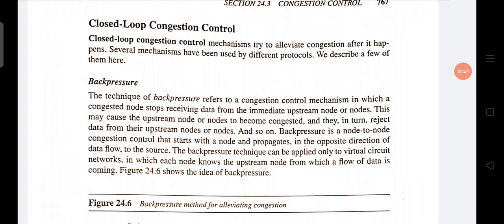We studied open loop congestion control in the previous class. In closed loop congestion control, the problem of congestion is controlled after the congestion has occurred — that means after congestion has happened at a node, this closed loop technique is used to control that congestion.